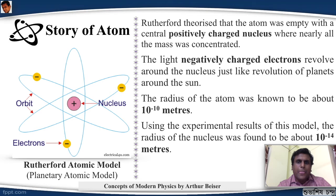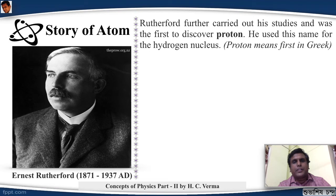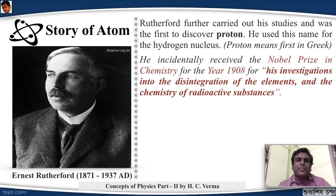Rutherford didn't stop at that. In the mid-1910s he carried out further studies and was the first to discover proton. He used this name for the hydrogen nucleus - protons mean first in Greek. Let me tell you, Ernest Rutherford did receive a Nobel Prize, but he didn't receive the Nobel Prize for all this work. He received the Nobel Prize in chemistry for the year 1908 for his investigations into the disintegration of elements and the chemistry of radioactive substances that he had carried out in McGill University, Canada and Cavendish Laboratory, England.